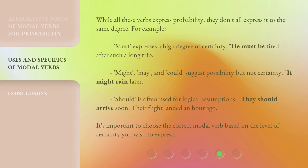While all these verbs express probability, they don't all express it to the same degree. For example, 'must' expresses a high degree of certainty: 'He must be tired after such a long trip.' 'Might,' 'may,' and 'could' suggest possibility but not certainty: 'It might rain later.' 'Should' is often used for logical assumptions: 'They should arrive soon — their flight landed an hour ago.' It's important to choose the correct modal verb based on the level of certainty you wish to express.